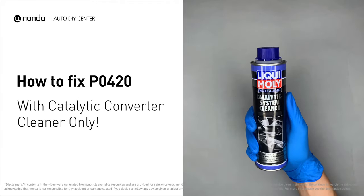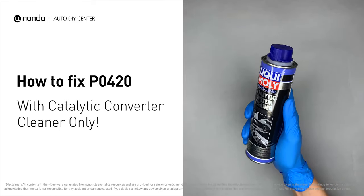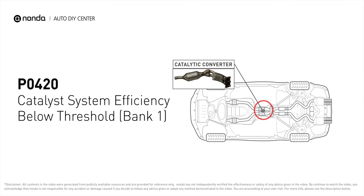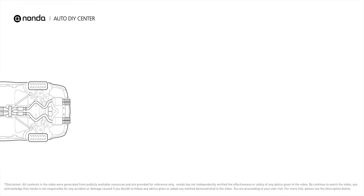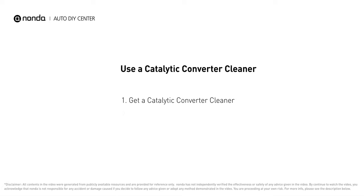With one bottle of catalytic converter cleaner, you can easily fix the P0420 error code by yourself. P0420 is one of the most common error codes — it means your catalyst system efficiency is below threshold near engine bank 1, which indicates that the catalytic converter is not functioning efficiently, so the vehicle is increasing the output of harmful pollutants. If you are getting a P0420 error code, this video is going to show you a practical solution to fix it at home.